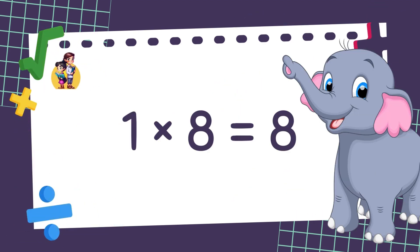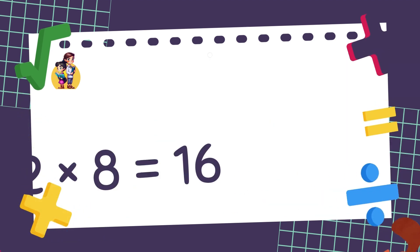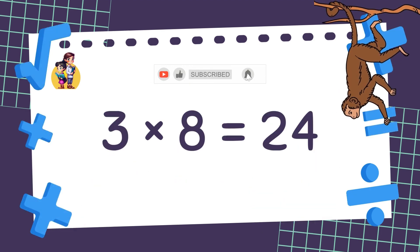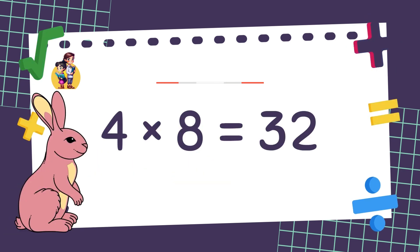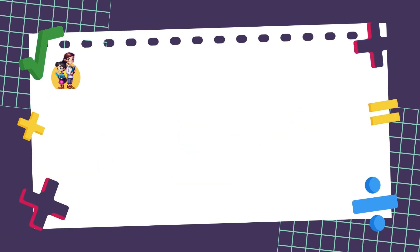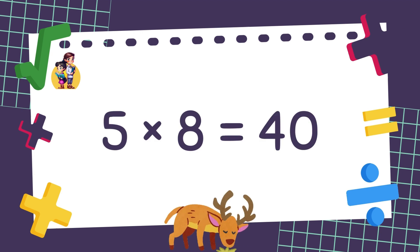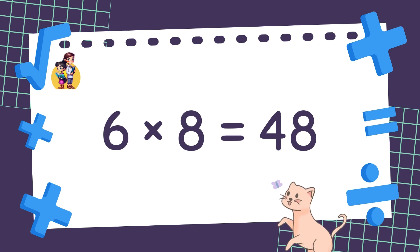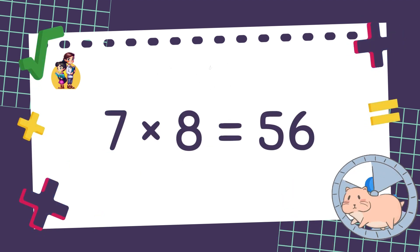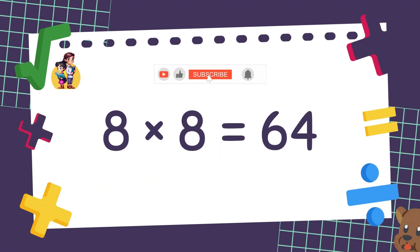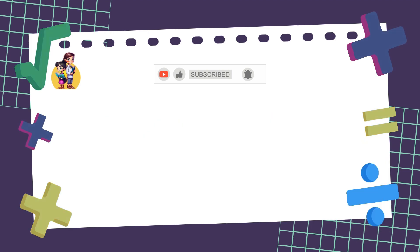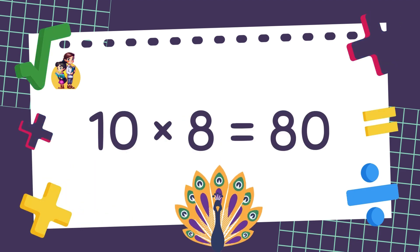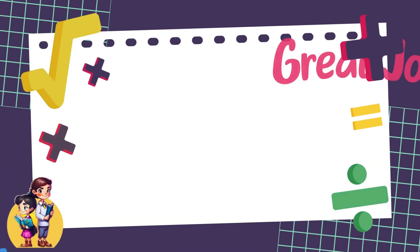1 x 8 is equal to 8. 2 x 8 is equal to 16. 3 x 8 is equal to 24. 4 x 8 is equal to 32. 5 x 8 is equal to 40. 6 x 8 is equal to 48. 7 x 8 is equal to 56. 8 x 8 is equal to 64. 9 x 8 is equal to 72. 10 x 8 is equal to 80. Well done!